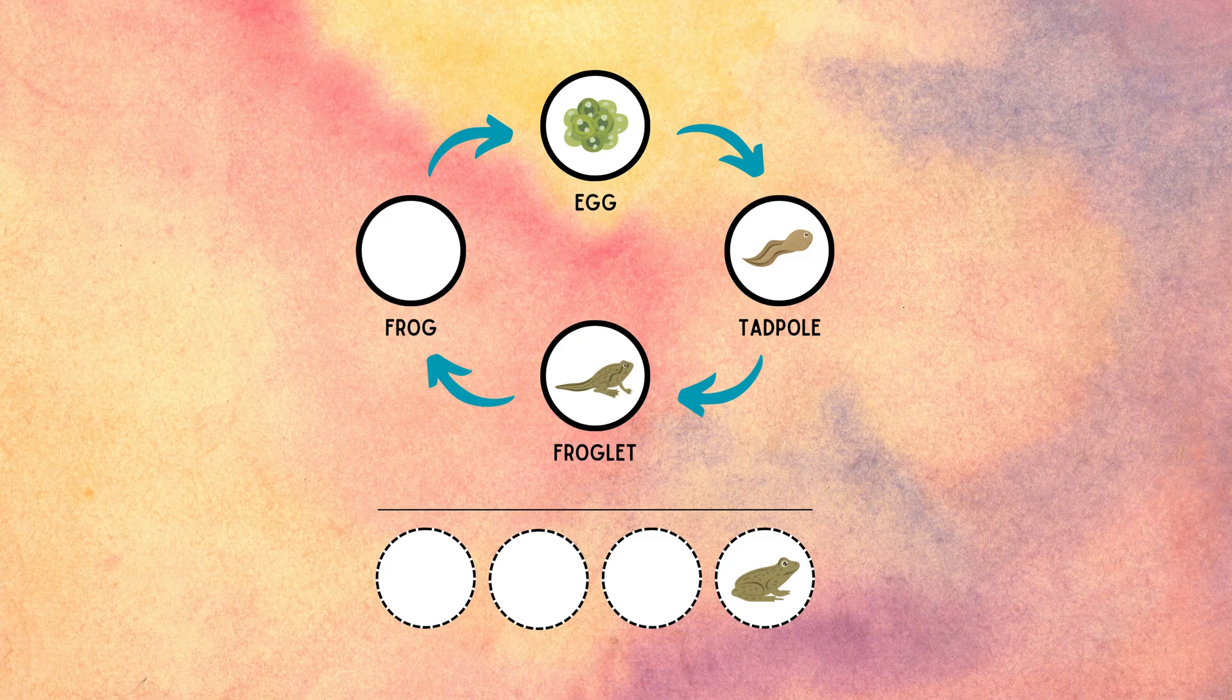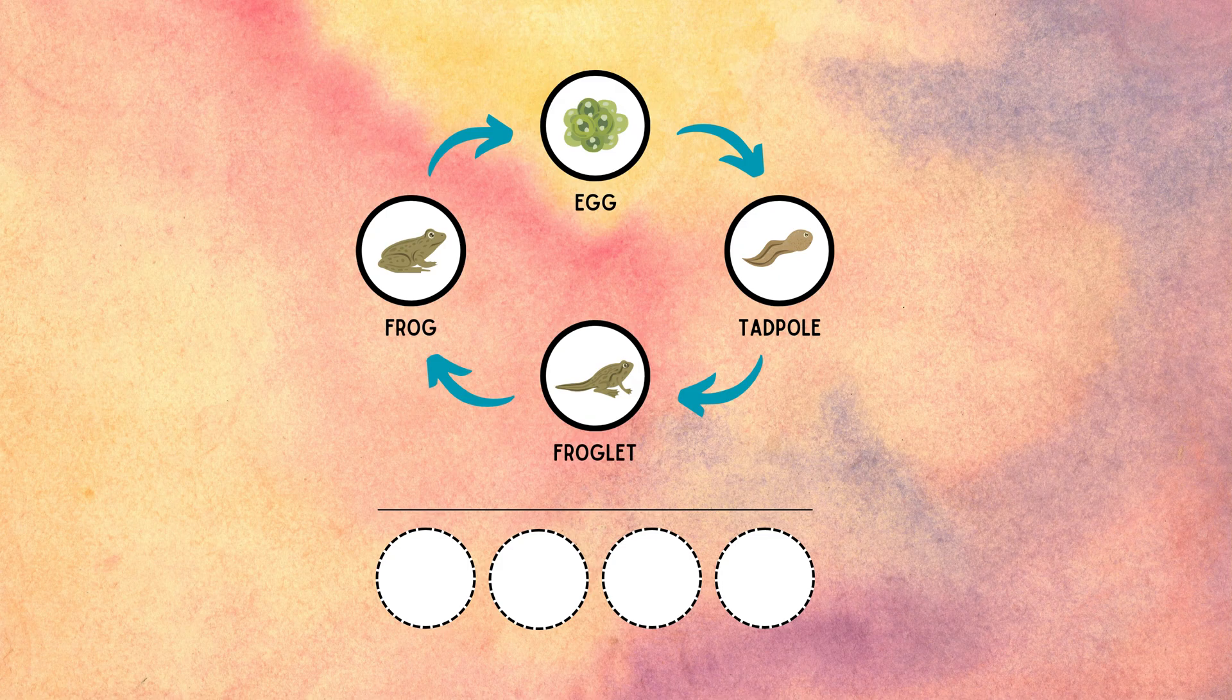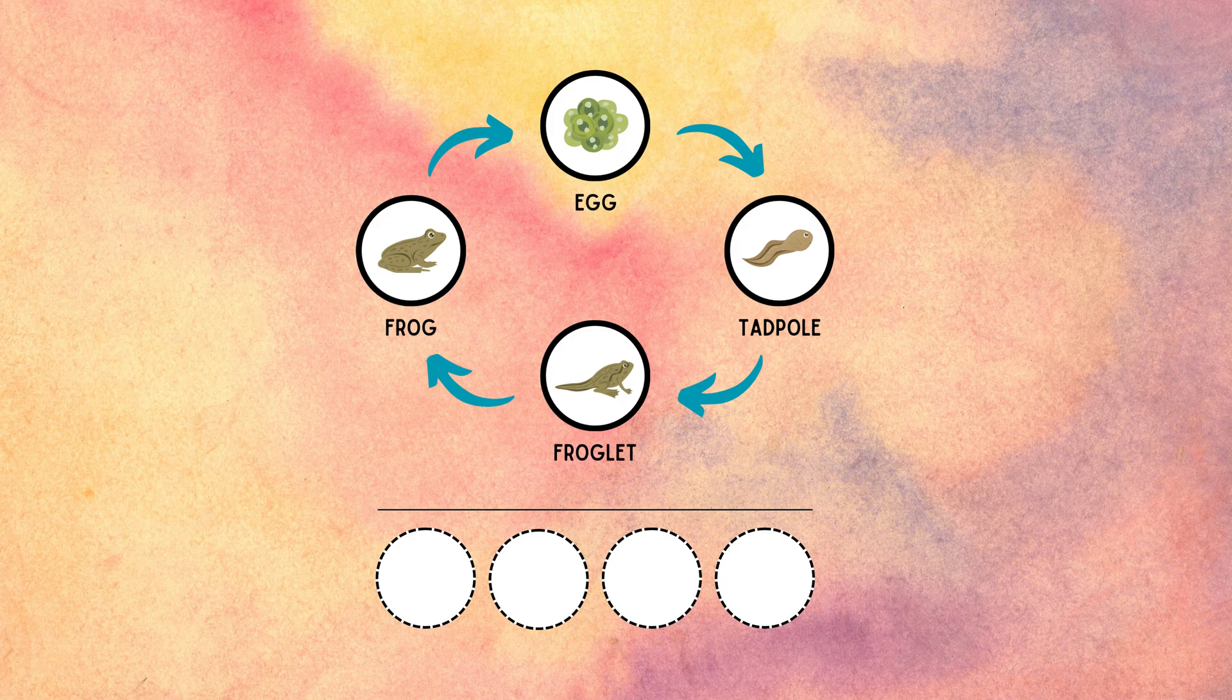During the froglet stage, the young frog's tail continues to shrink, and its body becomes more adapted to a terrestrial lifestyle. The froglet continues to grow to reach maturity and become an adult. At this stage, the frog is now capable of reproducing and will go on to lay eggs, continuing the cycle.